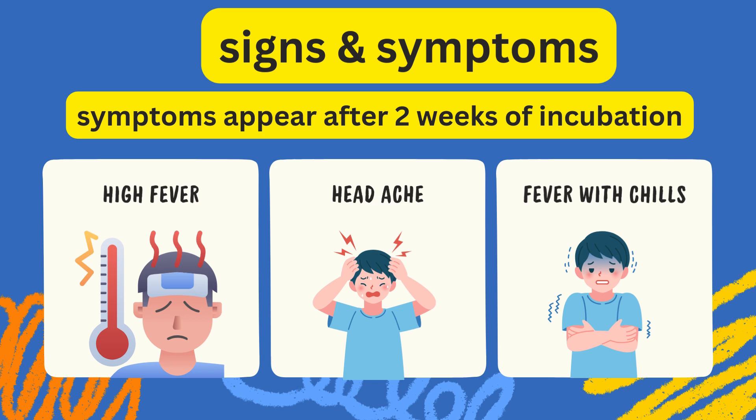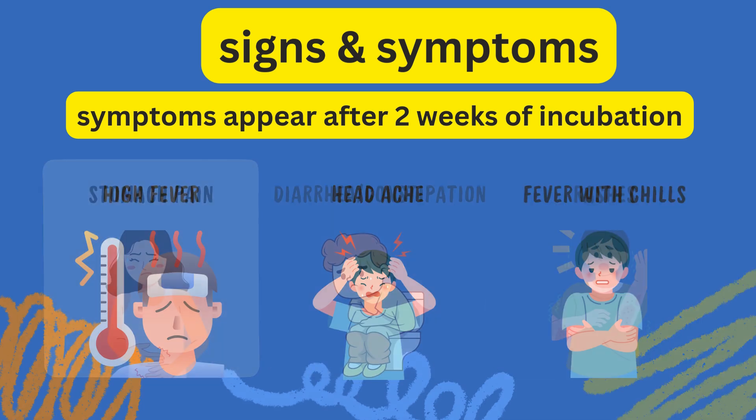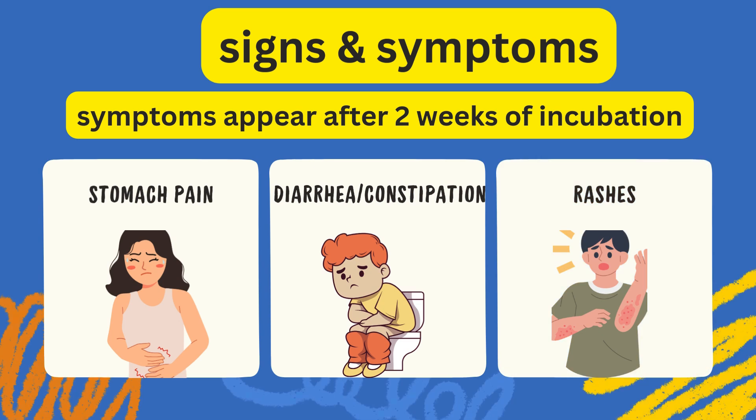Moving on to signs and symptoms: symptoms of typhoid appear after 10 to 14 days of incubation. These include high fever, headache, fever with chills, stomach pain, diarrhea or constipation, and rashes.